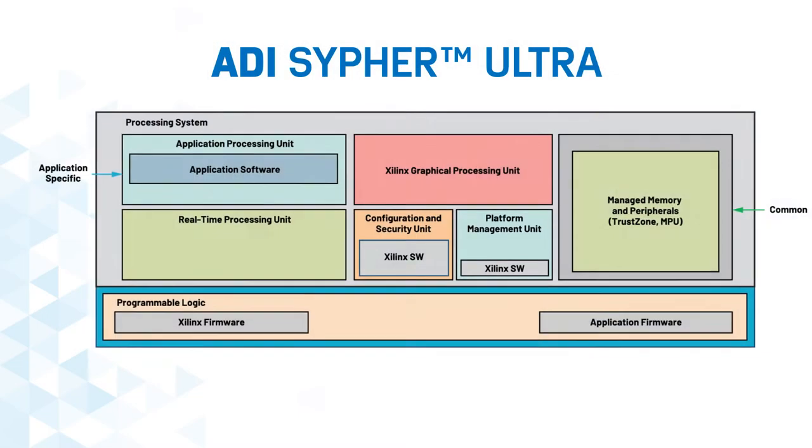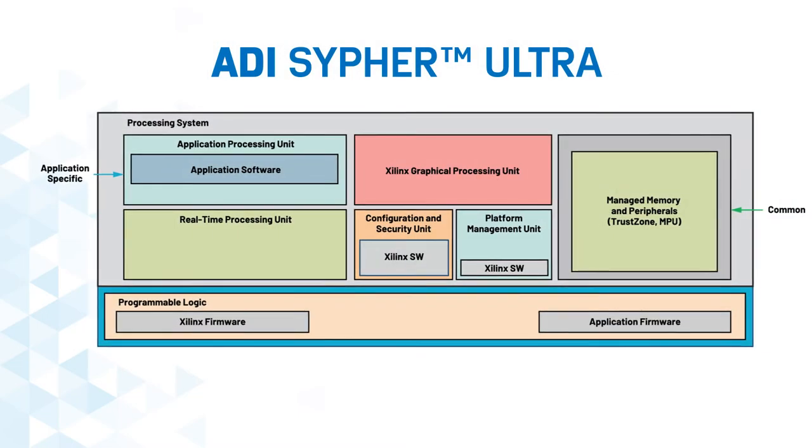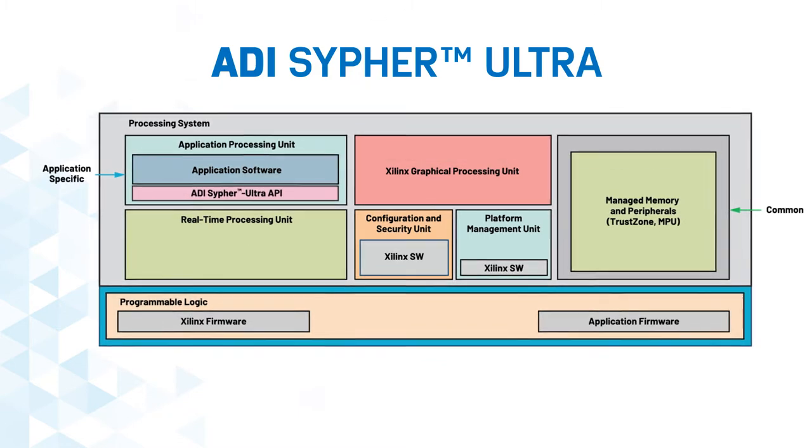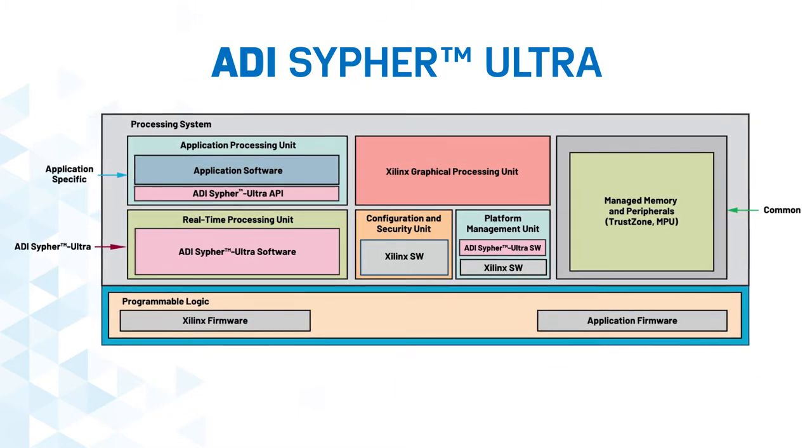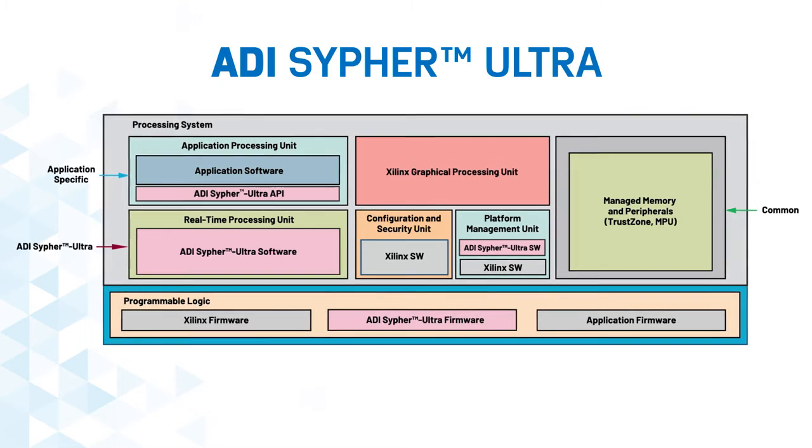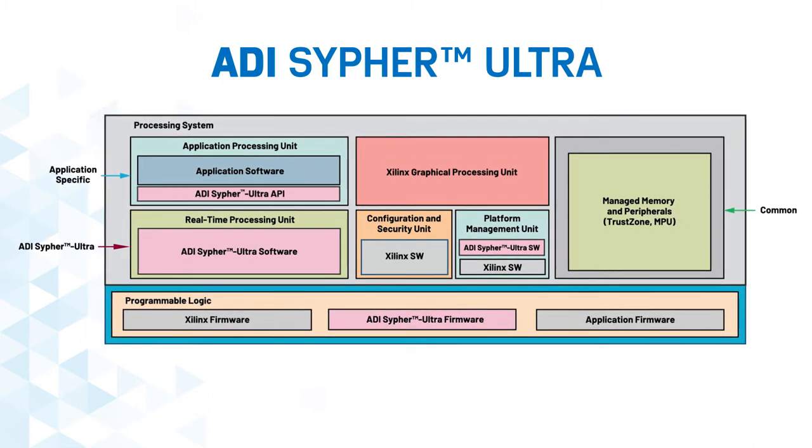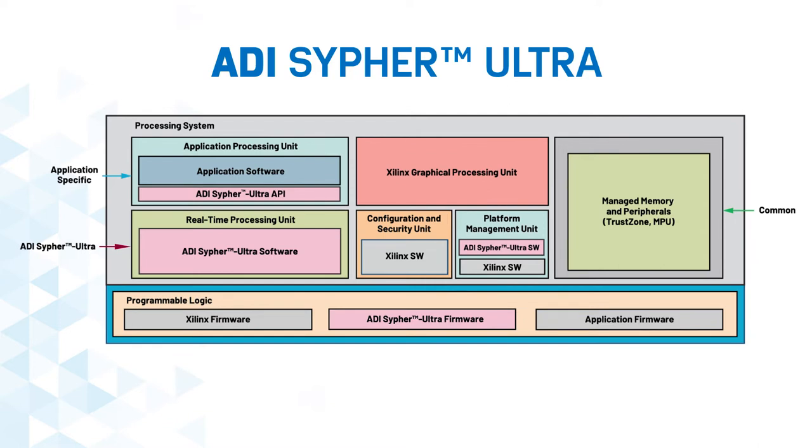Sypher Ultra is a high-assurance cryptographic subsystem with multiple layers of security controls that reside between the Xilinx capability and the end application, meaning minimal additional security expertise or hardware is required.